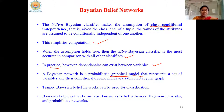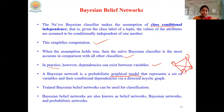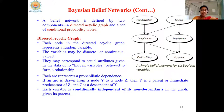A Bayesian belief network is a probabilistic graphical model that represents a set of variables and their conditional dependencies via a directed acyclic graph (DAG). The name 'network' implies it consists of nodes and connecting edges, representing relationships between attributes in graphical form. The trained Bayesian belief network can be used for classification. It is also known as a Bayesian network, belief network, or probabilistic network. A Bayesian belief network is defined by two components: a directed acyclic graph and a set of conditional probability tables.